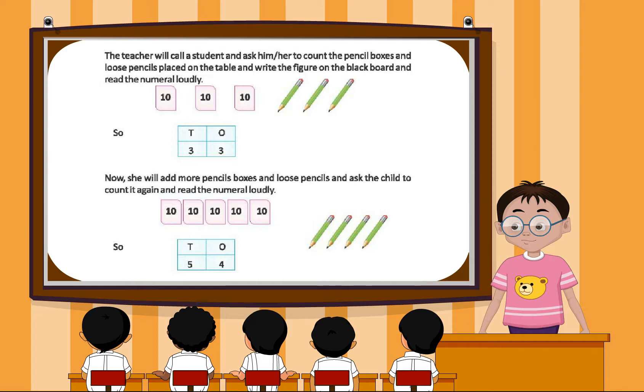The teacher will call a student and ask him or her to count the pencil boxes and loose pencils placed on the table, write the figure on the blackboard, and read the numeral loudly. So, 33.